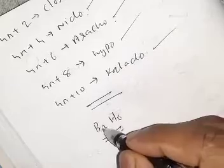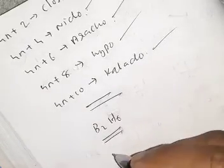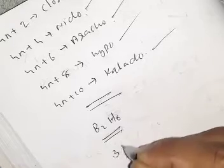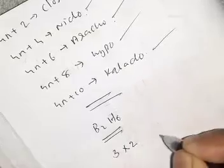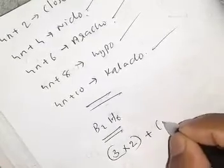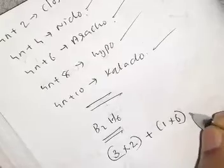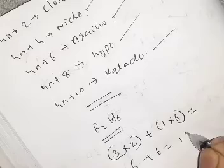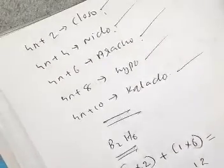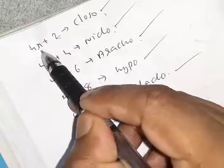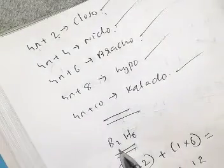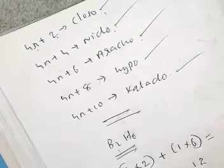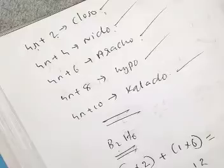For the first one, the boron outer electron number is 3. So, 3 into 2 — the number of boron atoms — plus 1 into 6 equals 6 plus 6, which equals 12. Then, using the formula 4N plus 2, where N is the number of boron atoms: 4 into 2 plus 2 equals 10.